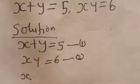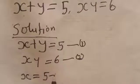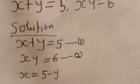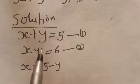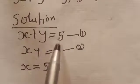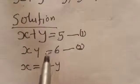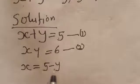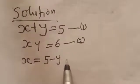So x is equal to 5 minus y. If plus y moves to the other side, it becomes minus y, because when a positive term crosses the equal sign it becomes minus. So x is equal to 5 minus y. Let's call this equation three.